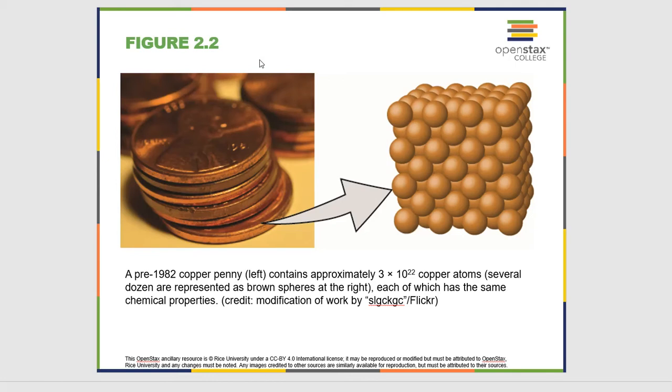So here we have copper, and you could see the macro version of copper if you literally look at a penny. Before 1982 pennies were made completely of copper. At the macro scale you know what a penny looks like. But if you were to blow this up all the way down to the atomic level, what you would see is all these atoms of copper next to each other. In a single penny there's 3 times 10 to the 22 copper atoms approximately. This is a massive number of atoms.